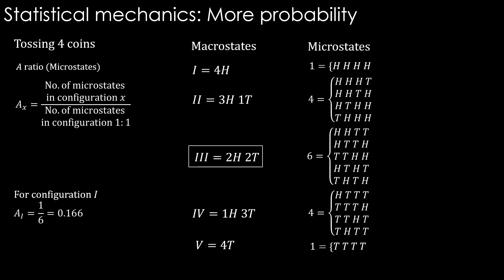For configuration 1, this A ratio turns out to be 1 divided by 6, which is 0.166. Index number is a way of representing macrostates: H divided by n, which is equal to number of heads divided by total number of coins. For configuration 1, it turns out to be h/n equals 4/4, which equals 1.